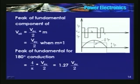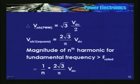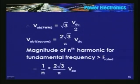In a pulse width modulated waveform, the peak of the fundamental is Vdc/2 (for M = 1). So the peak in 180-degree conduction is higher — 1.27 times Vdc/2. For line-to-line voltage in PWM, it is √3·(Vdc/2), whereas for square wave it is (2√3/π)·Vdc.